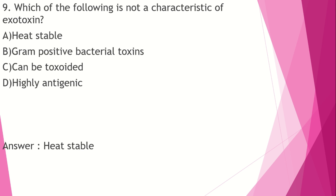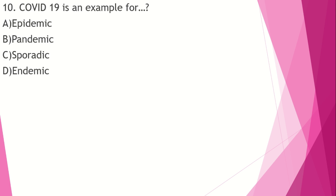Endotoxin is heat stable and produced by gram-negative bacteria. It is less antigenic and lipopolysaccharide in nature. Exotoxin is protein in nature. COVID-19 is an example of a pandemic. The answer is pandemic.